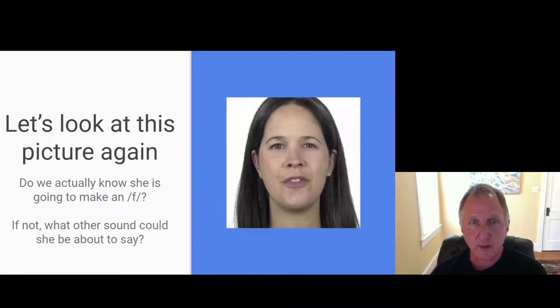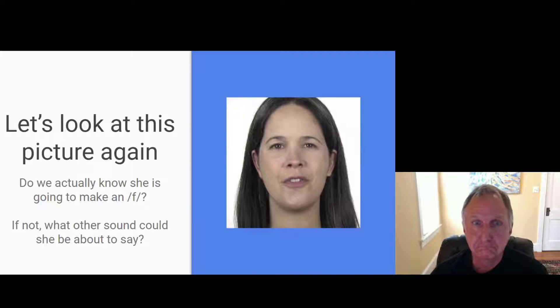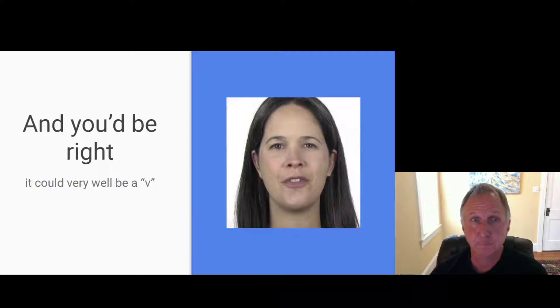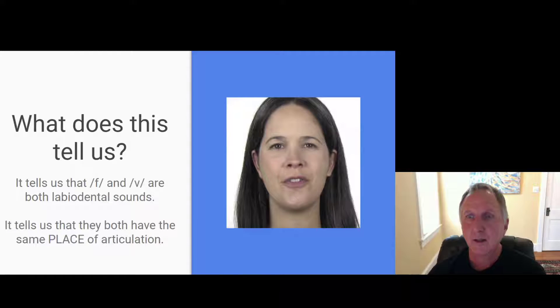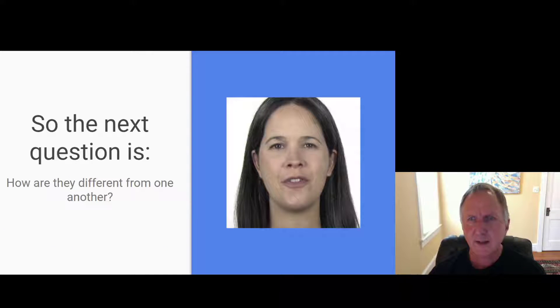Do we actually know she's going to make an F sound? If we don't know for sure, what other sound could she be about to say that's not F? You might have thought it was a word beginning with V, like 'very' — and you'd be right. This tells us that F and V are both labiodental sounds; they're both made with contact between the upper teeth and the lower lip. In a more general sense, they both have the same place of articulation. So how are they different from one another?